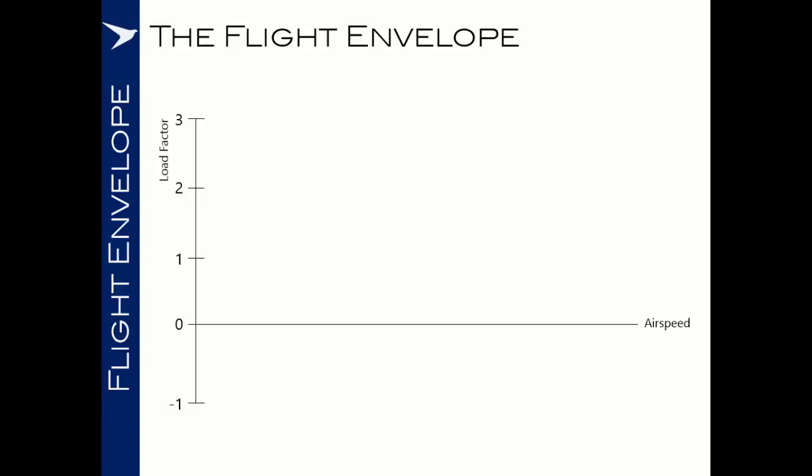You'll recall from our earlier discussion about lift that the maximum amount of lift that we can produce is a function of V squared, airspeed squared. Therefore, as we increase our speed, so we'll increase our ability to generate lift.